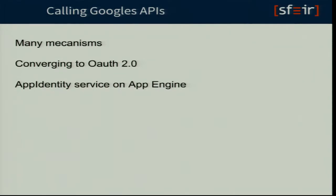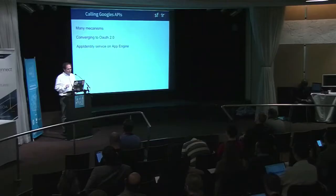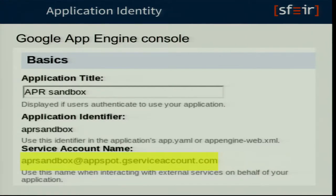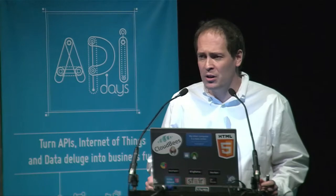Unfortunately, you can't really use this for cross-application web API calls, because all this authentication is designed for user authentication — it's HTTP redirects, cookies, and even two-factor authentication. You need someone at the keyboard to authenticate. So how do you do authentication between applications and App Engine? Let's see how you call Google APIs. There are many mechanisms, but today it's converging toward OAuth2. On App Engine, there's the App Identity Service, which makes things much easier. When you create an application on App Engine, your application gets an identity — an email, just like yours.